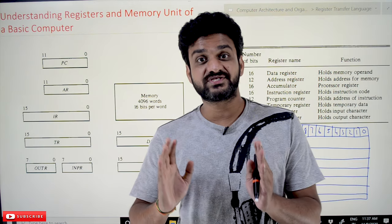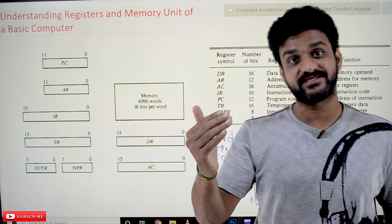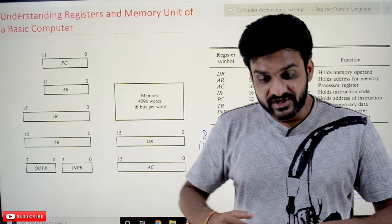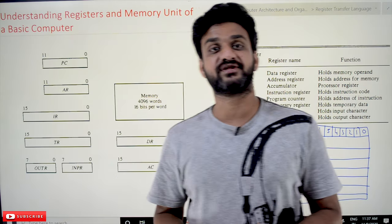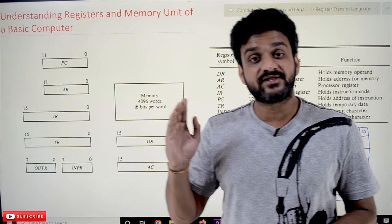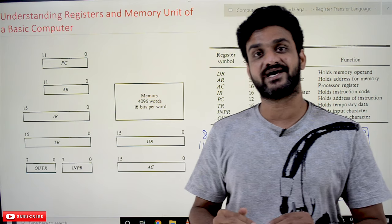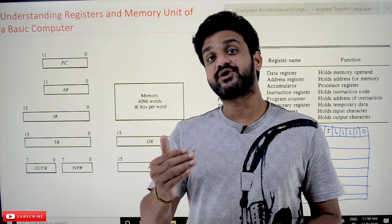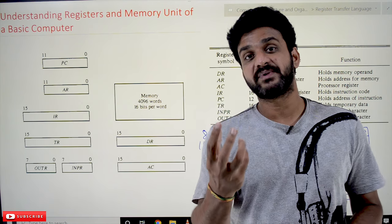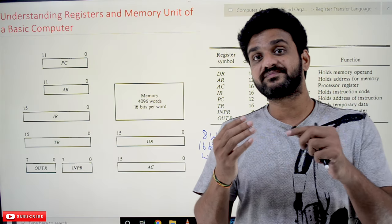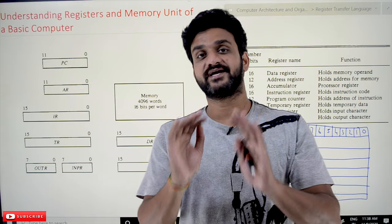In our previous video, we have seen the design of the basic computer. There, we discussed that it consists of eight registers and one memory unit. We will try to have a detailed understanding of each register — the size, the name, and the operation performed by each register. Apart from that, we will try to understand what a memory unit is, what it consists of, the size of the memory unit, and how addressing is done.